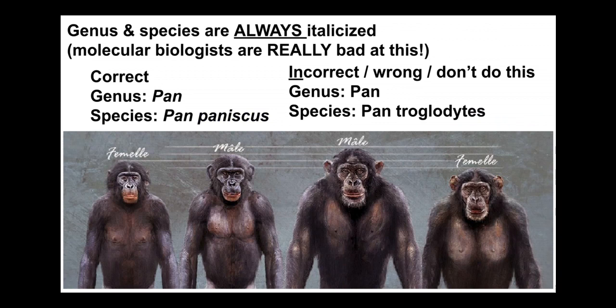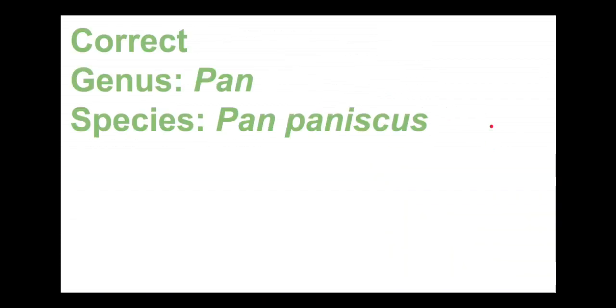Genus and species are always italicized. Molecular biologists love to publish papers where they don't respect this rule, and it drives organismal biologists and ecologists up the wall. So please italicize your names. It's just part of communication in biology, so that as soon as people see something italicized, they know it's a species name. The genus Pan is italicized; the whole species name is all italicized. If it's not italicized, it's wrong. If the genus is not italicized, it's wrong. If the specific epithet is not italicized, it is wrong. Many biologists don't do this, and it drives ecologists and organismal biologists crazy.